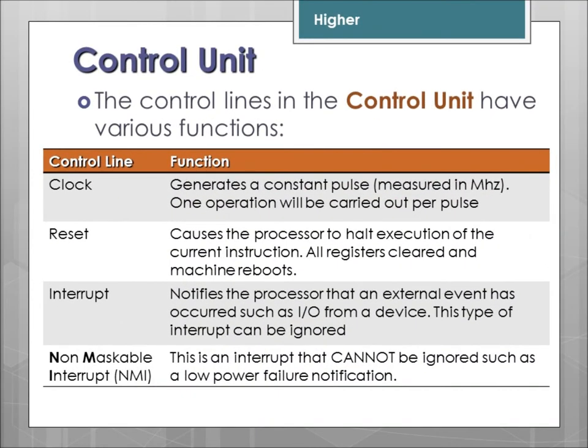There are various control lines in the control unit, and they have various functions. The easiest one to describe is the clock control line. This generates a constant pulse, measured in megahertz or gigahertz depending on how fast the processor is, and a single operation can be carried out per pulse.